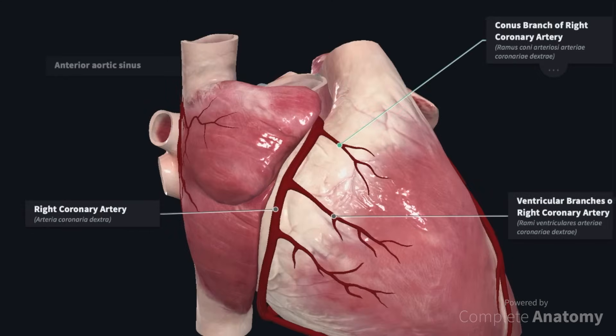One of which is the right conus branch, which supplies the anterior ventricular surface and the anterior pulmonary conus here. This artery often anastomoses with the corresponding left conus artery, which arises from the left coronary artery.